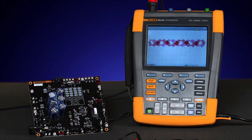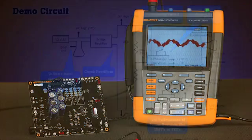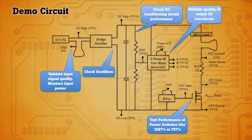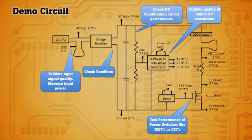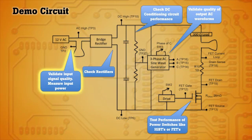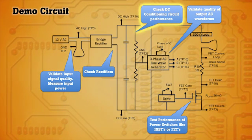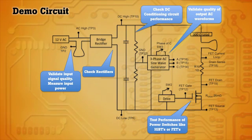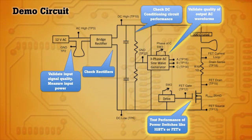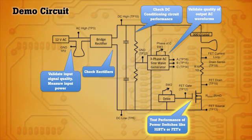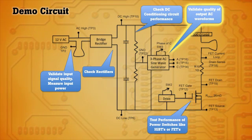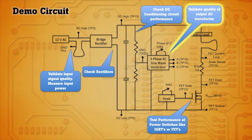The demo board we're using today is a basic inverter circuit that you might find in industrial power electronic systems. It starts with the input circuit. The AC goes through a bridge rectifier creating a DC bus that will then be used in the inverter circuit. Switches or high-powered switches modulate this DC bus to provide an AC waveform on the output of the board.